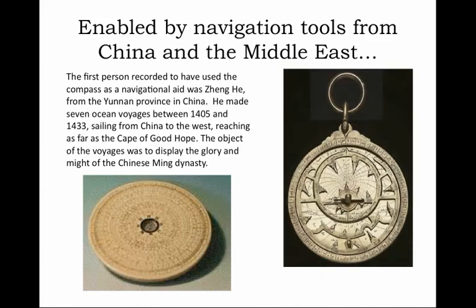Encountering navigational technologies like the astrolabe — originally a Greek invention but greatly improved by Arab seafarers and traders within the Islamic realm of trade and exchange — this particular astrolabe was made in the Islamic city of Damascus, Syria. In its own right a kind of work of art, but also a practical, valuable navigational tool that Europeans would adapt, along with the magnetic compass, from other cultures in their own voyages of exploration.